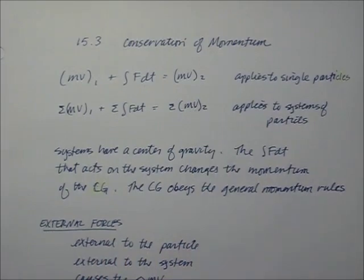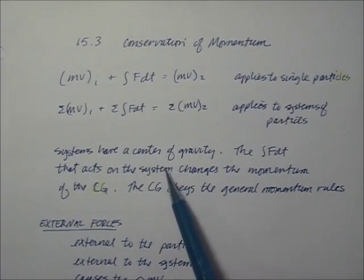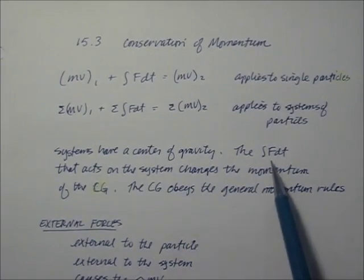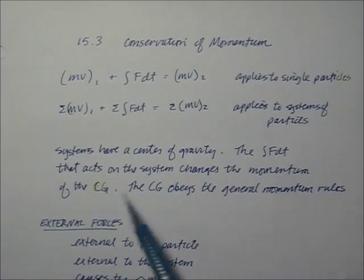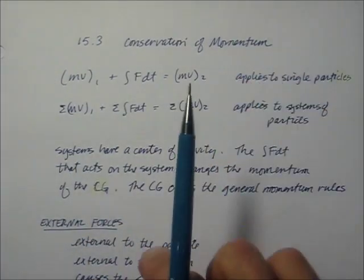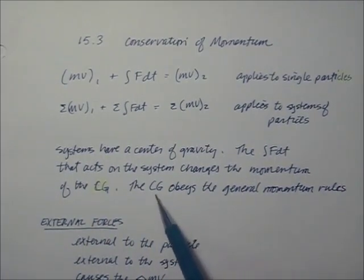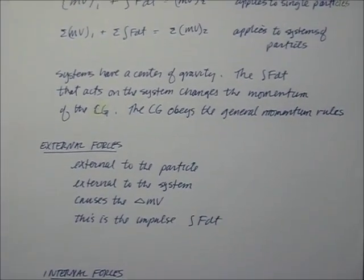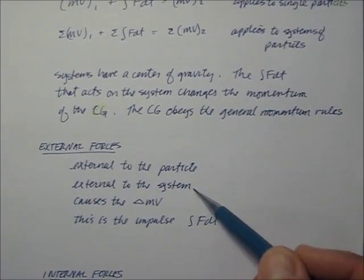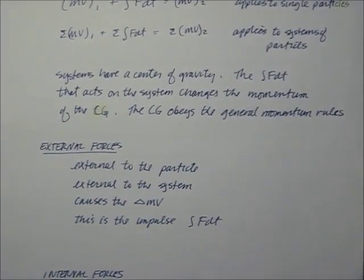That would be the mass times velocity of each particle. All systems have a center of gravity, and the impulse — the integral of F·dt that acts on a system — changes the momentum of the center of gravity. If you have two particles traveling together, the impulses act on the center of gravity of the system, and the center of gravity obeys the general momentum rules. We're talking about external forces, external to the particle or external to the system — they cause changes in momentum.